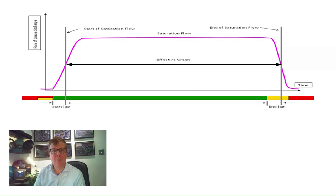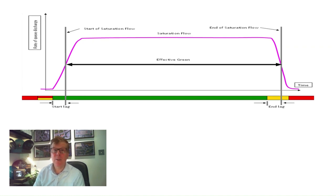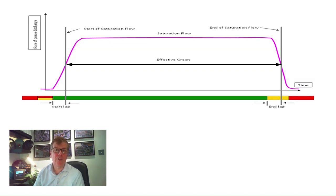At the start of the green period, vehicles will take some time to start moving and to accelerate to normal speed. However, after a few seconds the discharge rate of traffic reaches an approximately constant rate, referred to as the saturation flow or sat flow for short. It is the theoretical average number of PCUs which would flow through an individual lane in an hour if it were to receive a permanent green signal, although in reality headway between vehicles would increase so that saturation would not be maintained. Saturation flow can be measured, estimated or calculated.